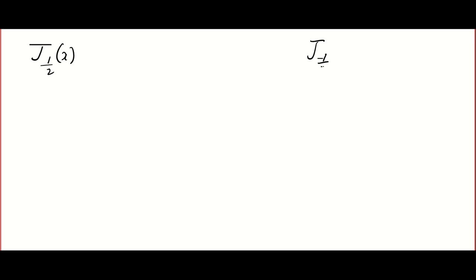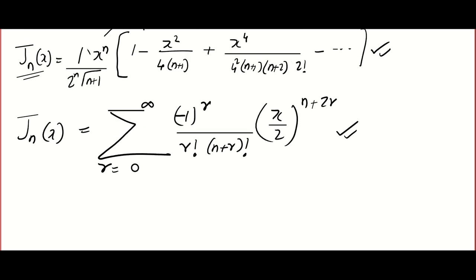We will do two simple problems that have been repeated many times: find J_{1/2}(x) and J_{−1/2}(x). The most repeated questions in exam papers are J_{1/2}, J_{3/2}, J_{5/2}, J_{−1/2}, J_{−3/2}, J_{−5/2}. Now and then they also ask other things like the reduction formula for J_n(x) or relations between Bessel functions. If you are looking for the minimum things to study, focus on J_{1/2}, J_{3/2}, J_{5/2}, etc.